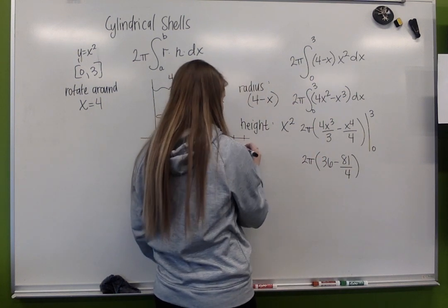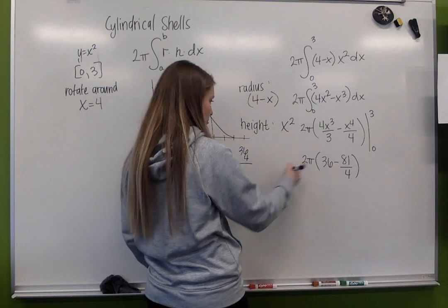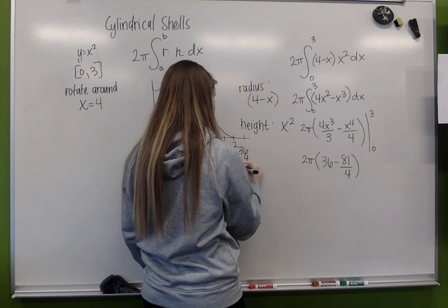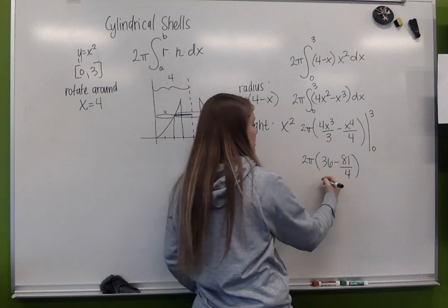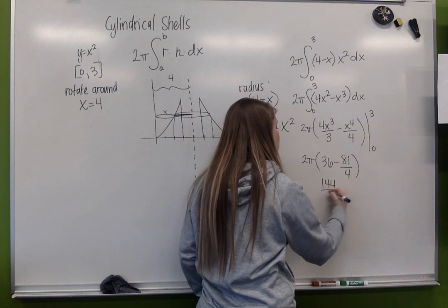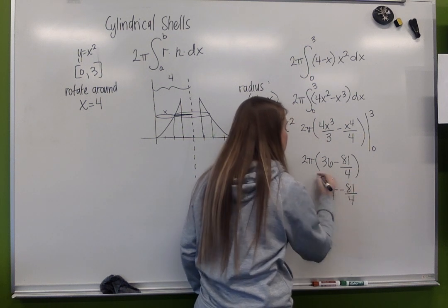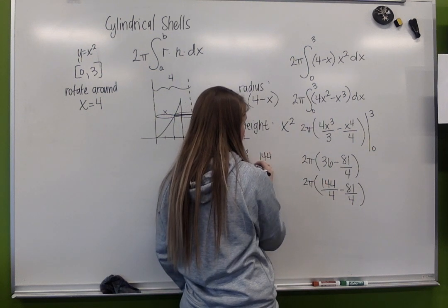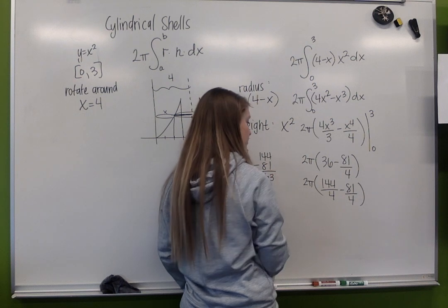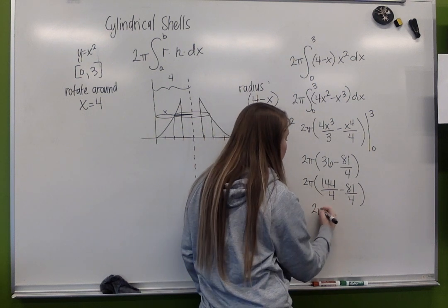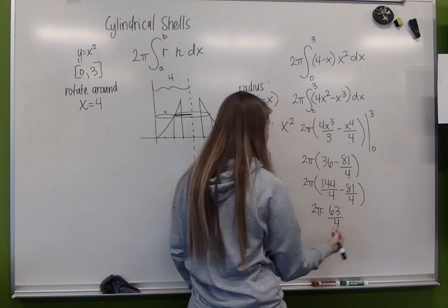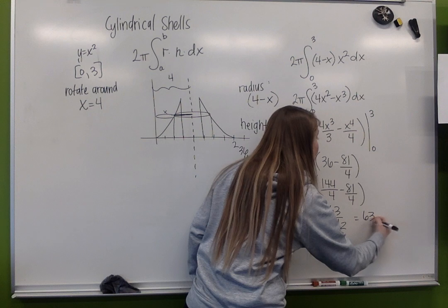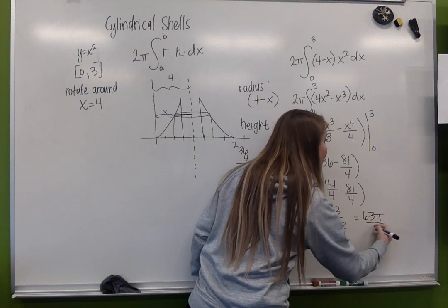Alright, so I need a common denominator, so I'm multiplying 36 by 4. So 36 becomes 144 over 4 minus 81 over 4. And then 144 minus 81. I'm going to get 2 pi times 63 over 4, reduce my 2, and I get 63 pi over 2.